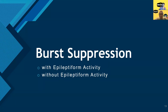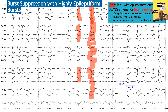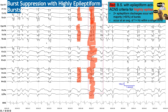Burst suppression can be further classified as with or without epileptiform activity. Looking at this example — if you count up how much of it is flat, it's close to 50%, so let's call it burst suppression. The bursts look very abnormal — they're full of epileptiform discharges, with complexes of maybe two or three. For it to be highly epileptiform burst suppression, all bursts must have at least two epileptiform discharges and they must occur at at least one Hz — both criteria must be met.